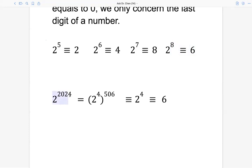So if we look at 2 raised by 2024, we can write the exponent of 2024 as 4 times 506, right? 4 times 5 is 20, 4 times 6 is 24. So the last digit of 2 raised by 2024 is the same as 2 raised by 4. And 2 raised by 4, we know the last digit is 6, because it's 16, 10 plus 6.